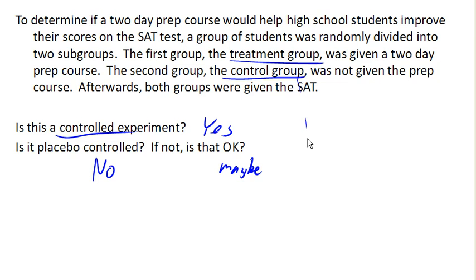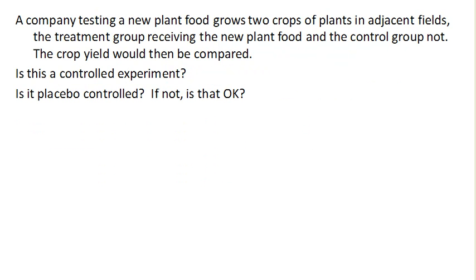So suppose a company is testing a new plant food, and they grow two crops of plants in adjacent fields. The treatment group receives the new plant food, and the control group does not. The crop yield would then be compared. Is this a controlled experiment?